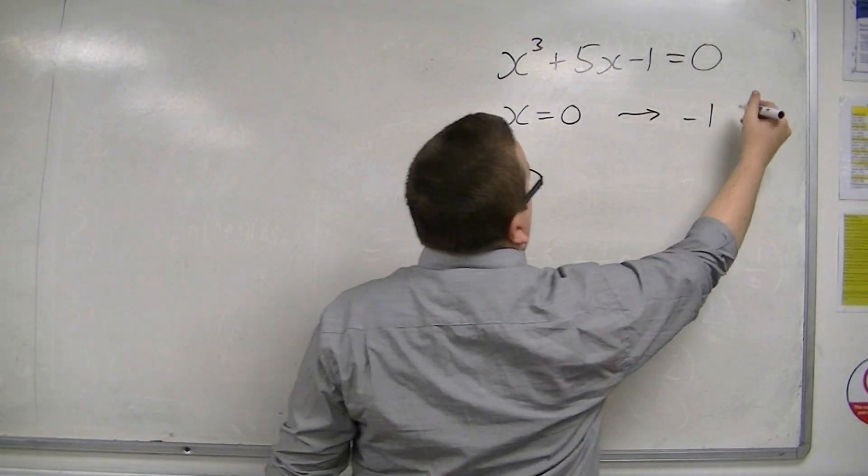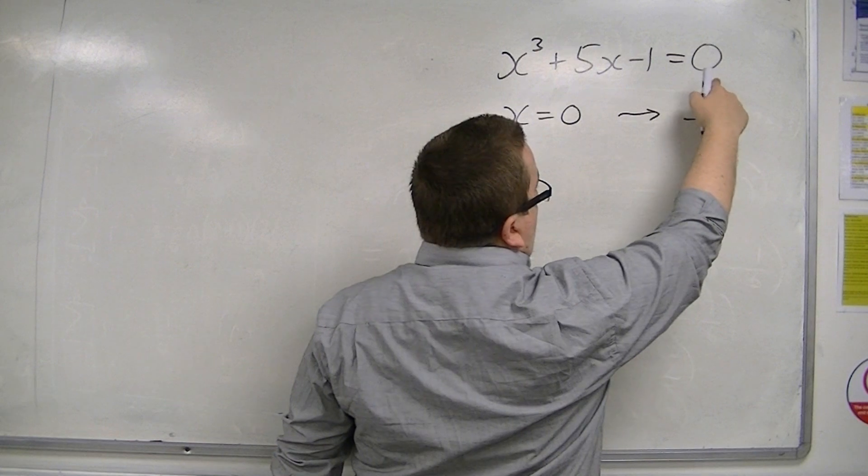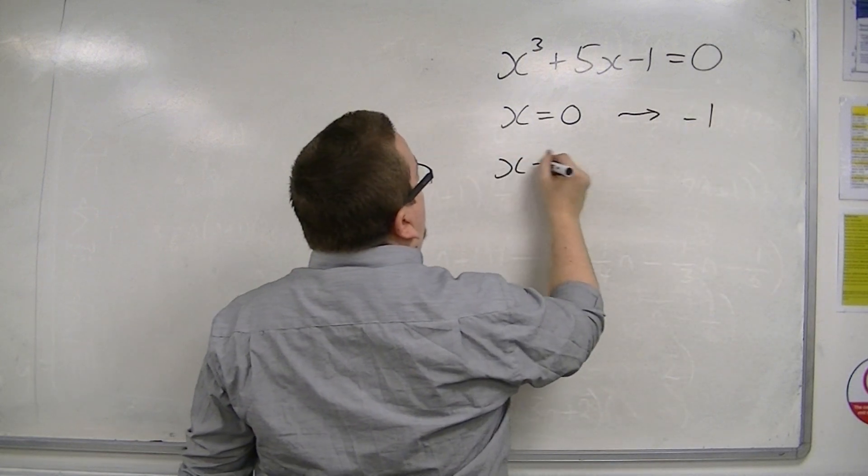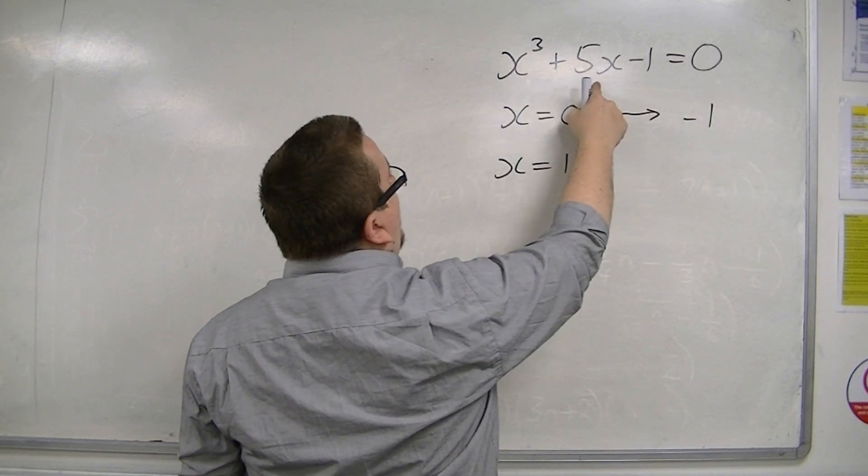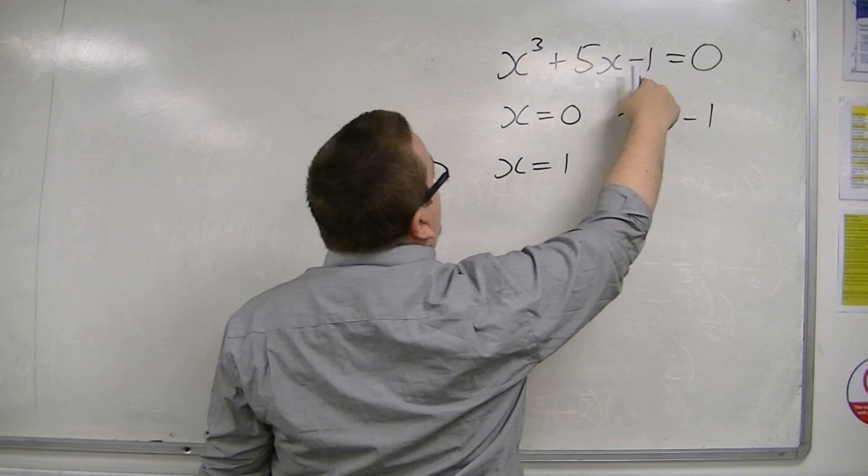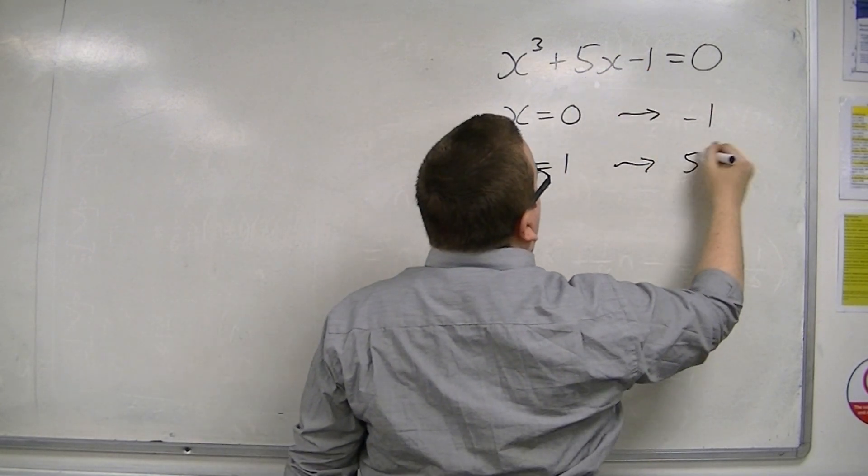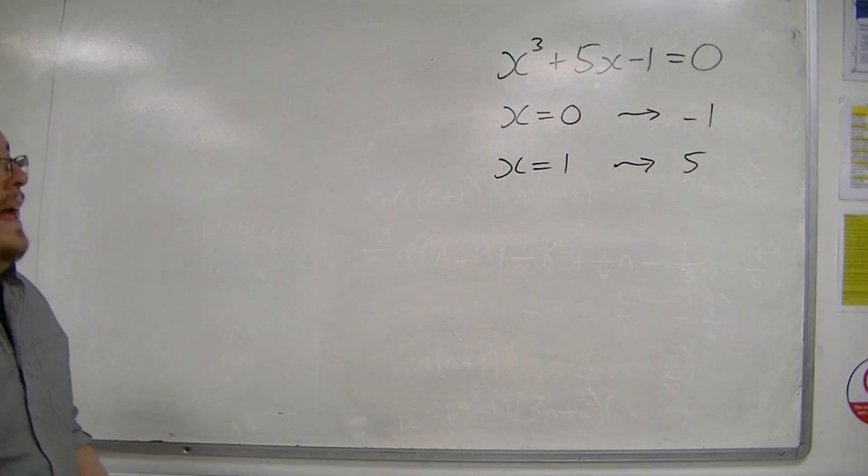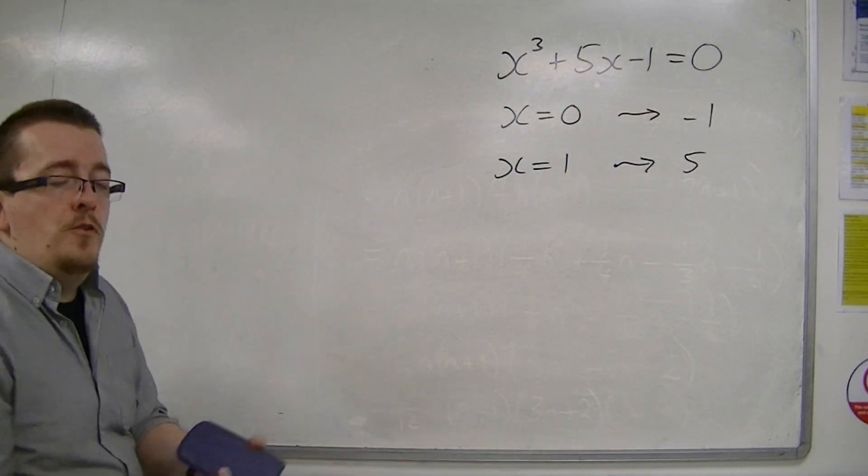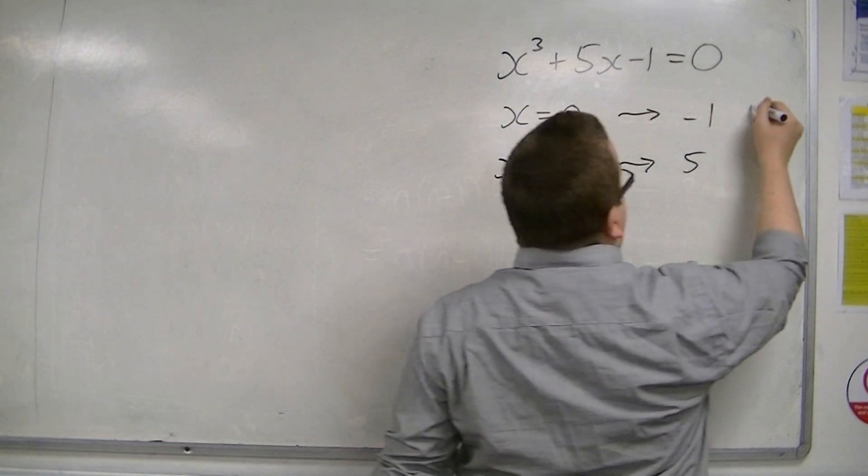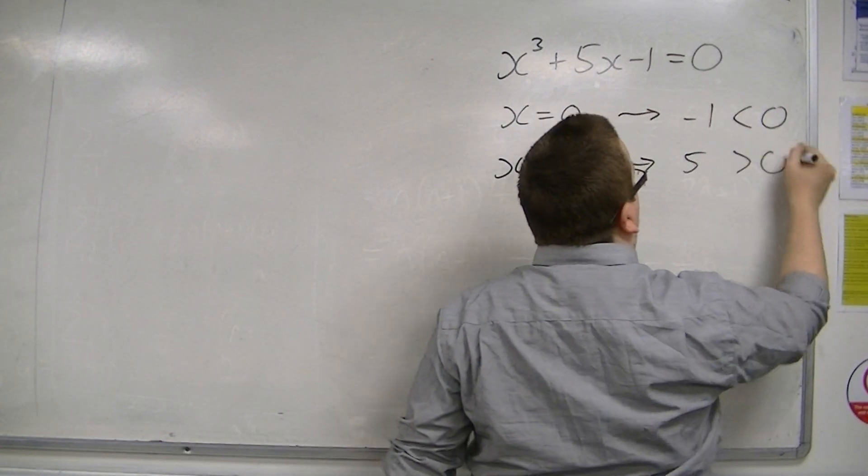...because it's negative but it's close to 0. When x is 1, I get 1 plus 5 is 6, take away 1 is 5. So, between x is 0 and x is 1, I go from something negative to something positive.